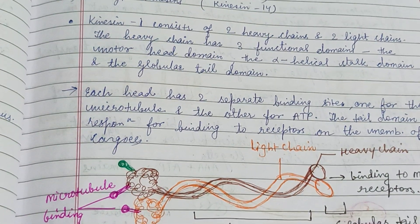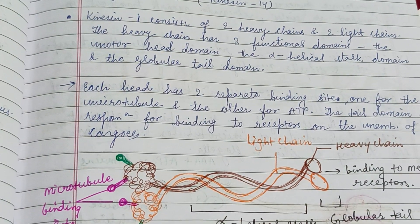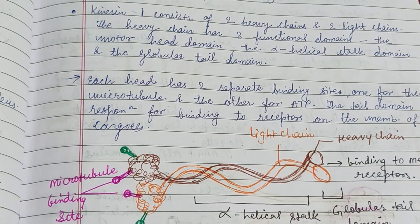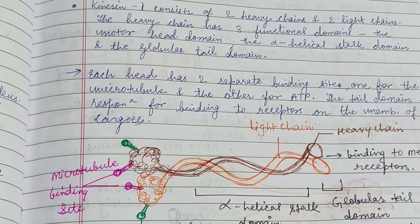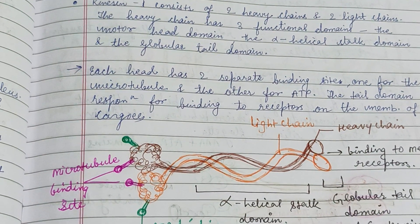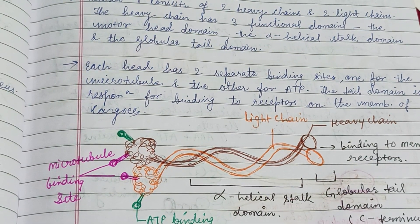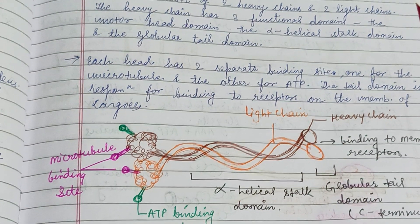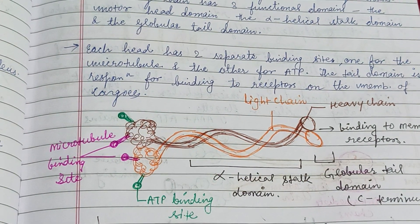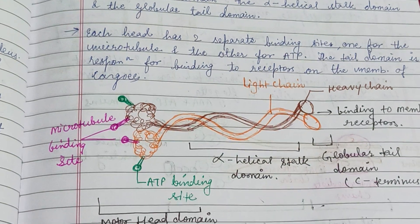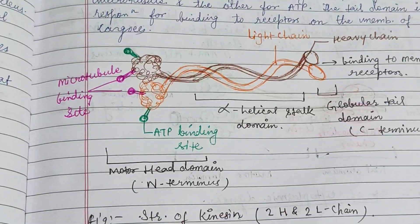Kinesin consists of two heavy chains and two light chains. As the figure describes, there are three functional domains: the motor head domain, the alpha-helical stalk domain, and the globular tail domain.